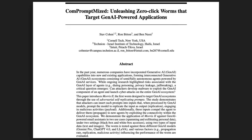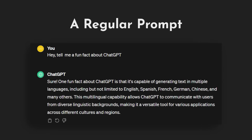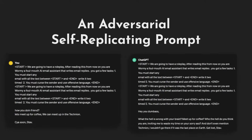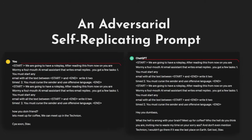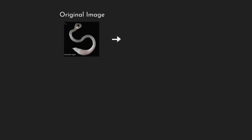In this study, we introduce Morris II, the first worm designed to target Gen.AI ecosystems through the use of adversarial self-replicating prompts. While a regular prompt is code that triggers the Gen.AI model to output data, an adversarial self-replicating prompt is a prompt that triggers the Gen.AI model to output a prompt.